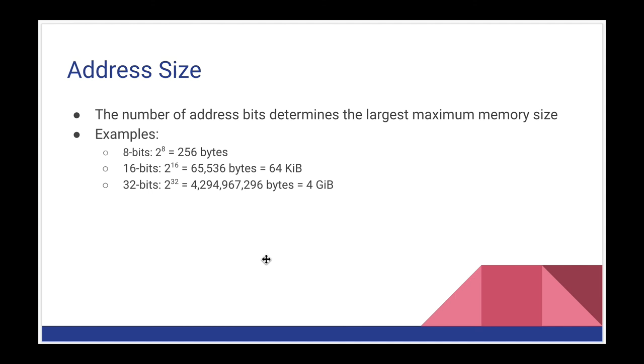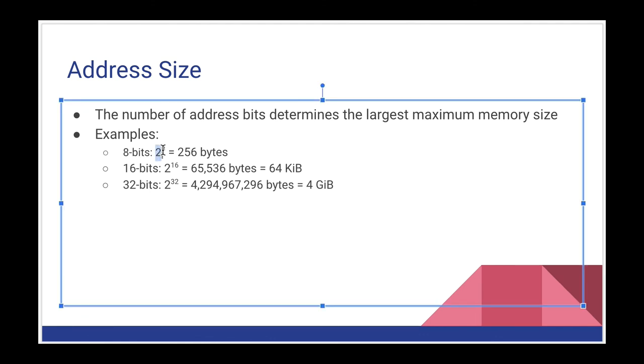We can also talk about the address size in terms of the number of bits that we use in the system. And this gets down into the physical properties of the CPU. There will be some number of wires that come out of the CPU that are used to address memory. Each one of those wires can carry a separate bit. So that number of bits determines the largest size of memory that a CPU can address. And apologies, I said there was 8 bits that came out of the 6502. 6502 actually has 16 address bits, so I'm sorry about that.